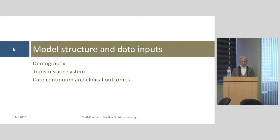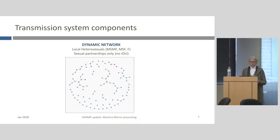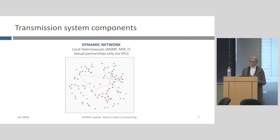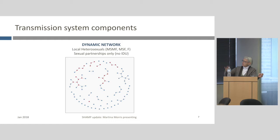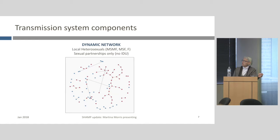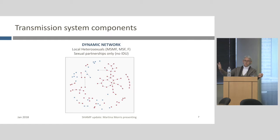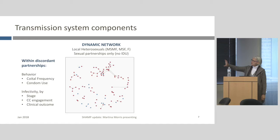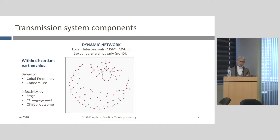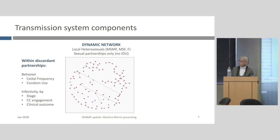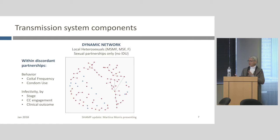Turning to model structure and data inputs: we start with a dynamic network. There are three different types of people by sex and sexual preference — men who have sex with men and women (MSMF), men who have sex with women only, and women. Sexual partnerships represented here do not include injection drug use. Within discordant partnerships, behavior involves both coital frequency and condom use, plus infectivity that depends on behavior and stage of infection. Engagement in care for infected and uninfected individuals covers PrEP and ART, and clinical outcomes of any biomedical prevention or treatment.